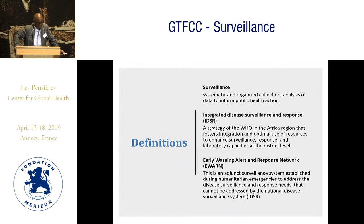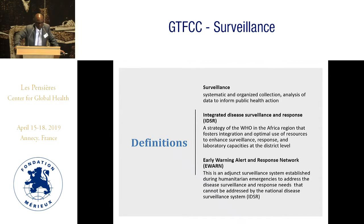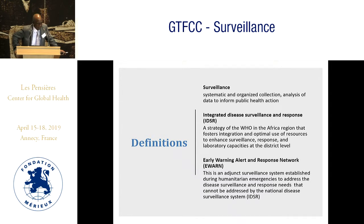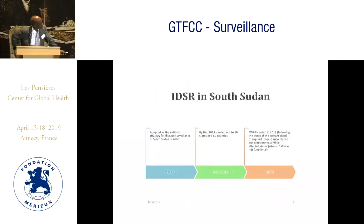In conflict-affected settings, where routine systems like IDSR are not functioning properly, we have what we call the Early Warning Alert and Response Network, which uses the same functions, only that this time it's largely humanitarian partners that run the surveillance services. In South Sudan, we have both systems: EWARN running in conflict-affected areas run by partners, and IDSR in areas that are relatively stable.